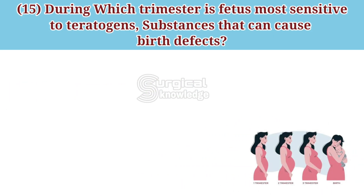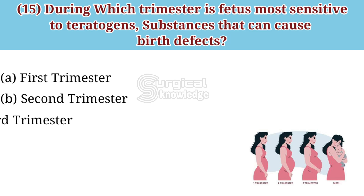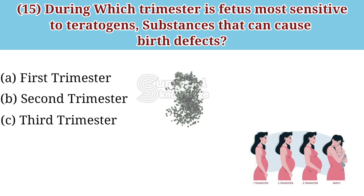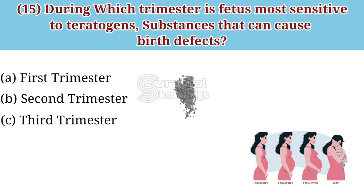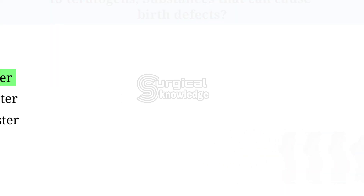During which trimester is the fetus most sensitive to teratogens — substances that can cause birth defects? Options: first trimester, second trimester, third trimester. The correct answer is first trimester.